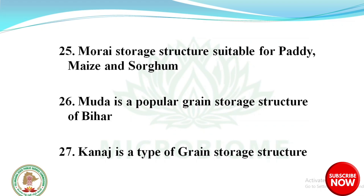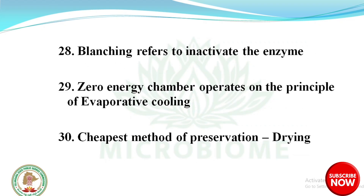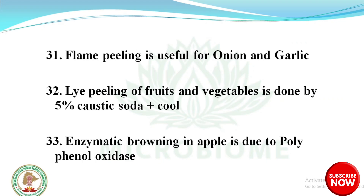Muda is a popular grain storage structure of Bihar. Tanage is a type of grain storage structure. Blanching refers to inactivating the enzyme. Zero energy chamber operates under the principle of evaporative cooling. Cheapest method of preservation is drying. Flame peeling is useful for onion and garlic.